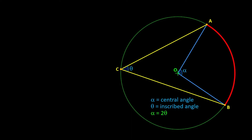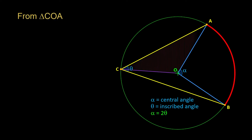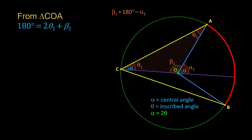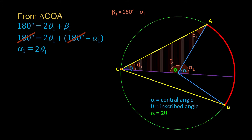Now let us prove this theorem. Connect C to O. We have an isosceles triangle COA — it is isosceles because CO is equal to OA. These two angles are equal; let us call them Theta 1. Extend CO. Let us call this angle Alpha 1 and this angle Beta 1. So 2·Theta1 + Beta1 = 180°. Substituting Beta1 = 180° − Alpha1 and canceling 180°, then transposing Alpha1 to the left, we get Alpha1 = 2·Theta1.